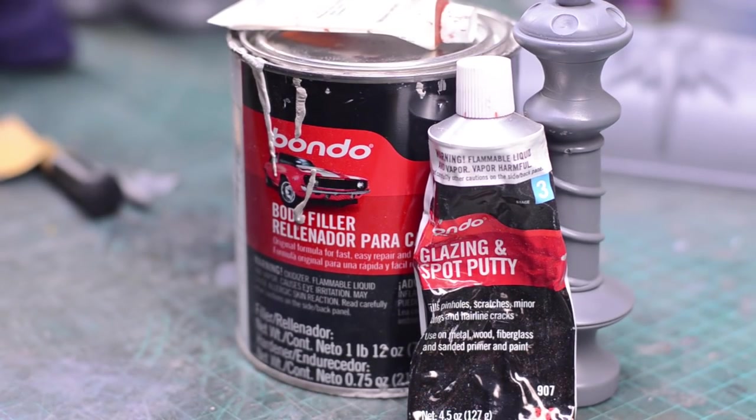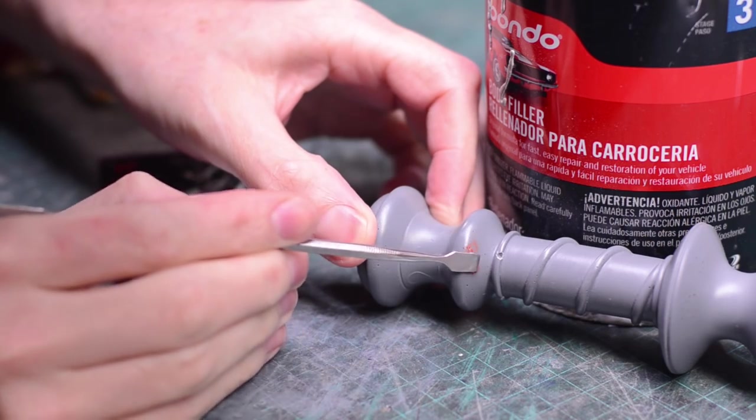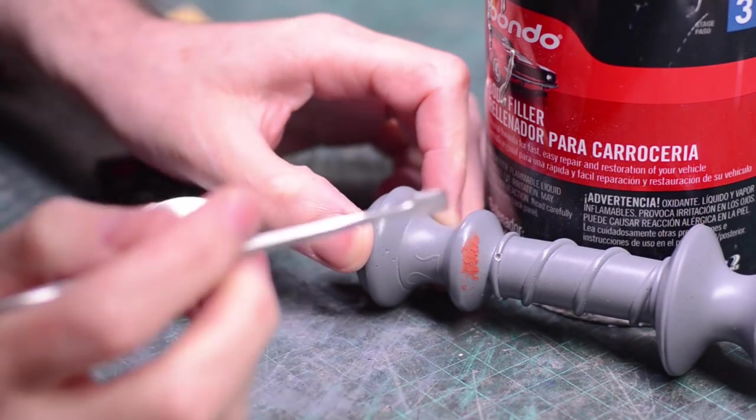Now for really small bubbles, like smaller than a sixteenth of an inch, those can be filled in with some air drying spot putty. This gets smeared into all of those little bubbles and allowed to dry.